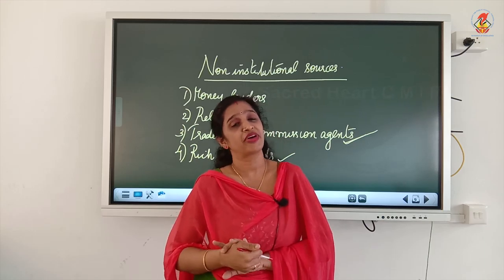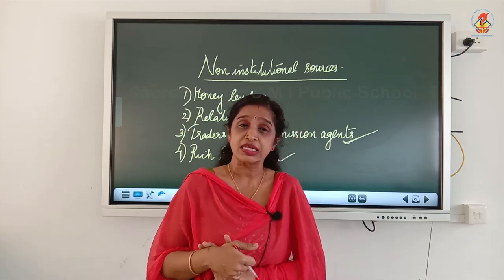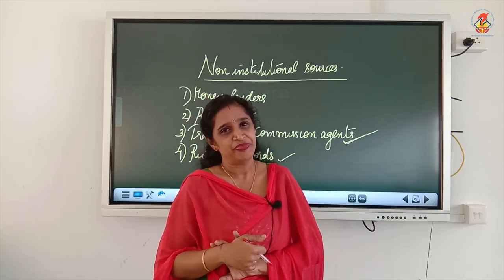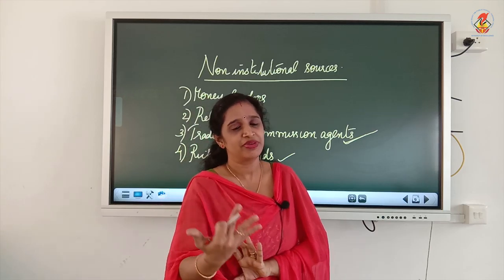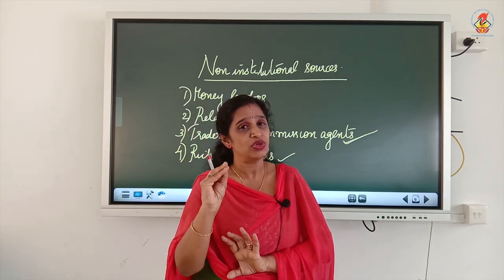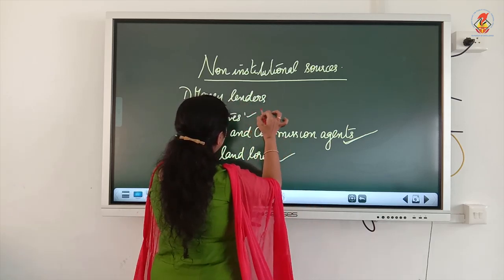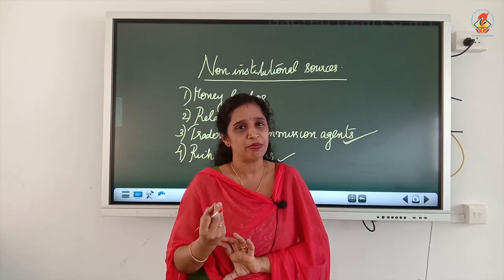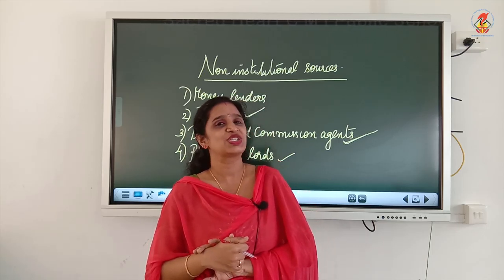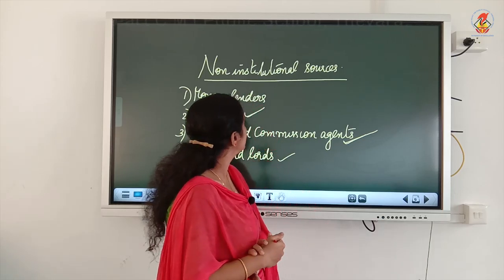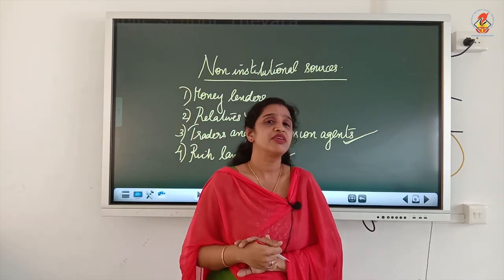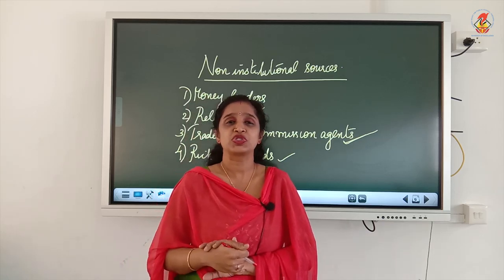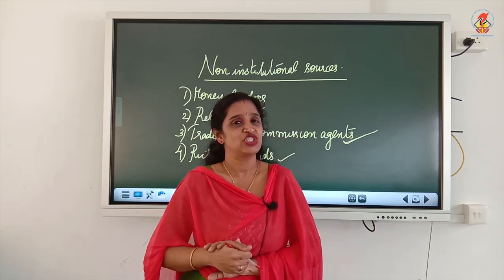Point number four is rich landlords, who are similar to money lenders — they give money to farmers but at a higher rate of interest. So the first and fourth sources are very risky, and the third involves a risky factor too. Borrowing from family members and relatives has no risk but the possibility of getting money from them is very less since everyone in the family is likely also a farmer. Government has to find better sources of credit for farmers — that moves us to the discussion of institutional sources, which will be continued in the next video.